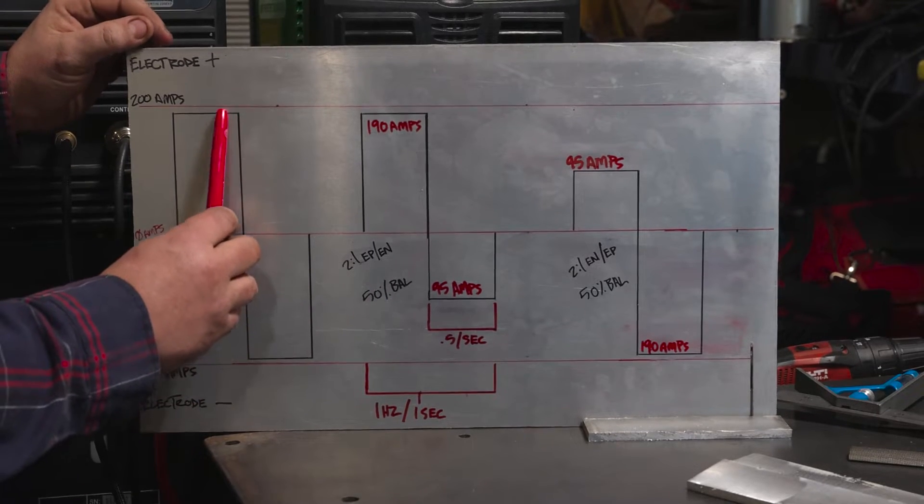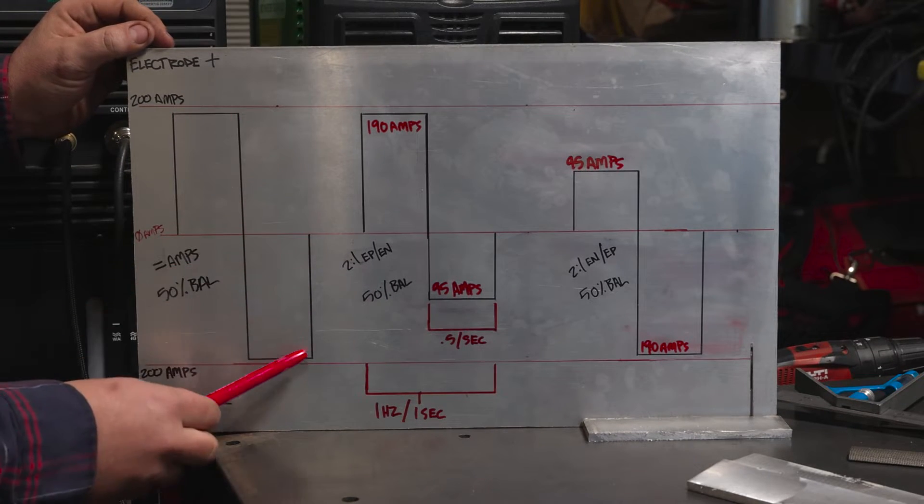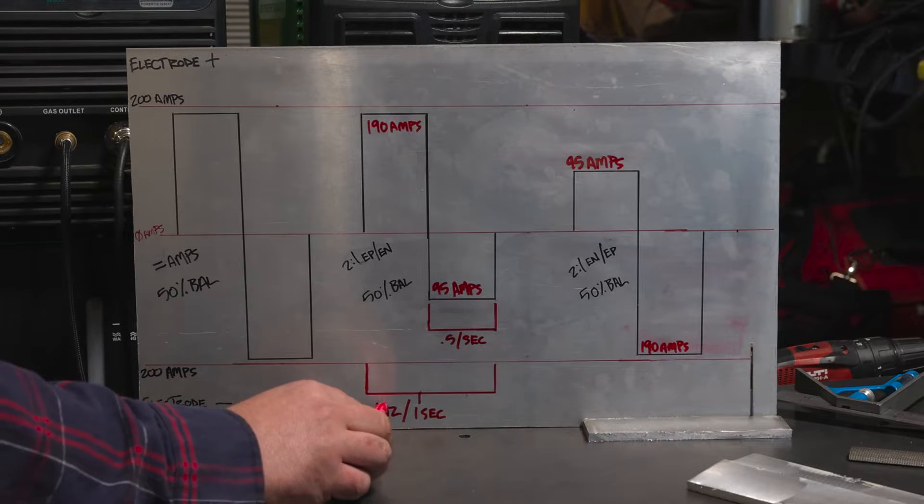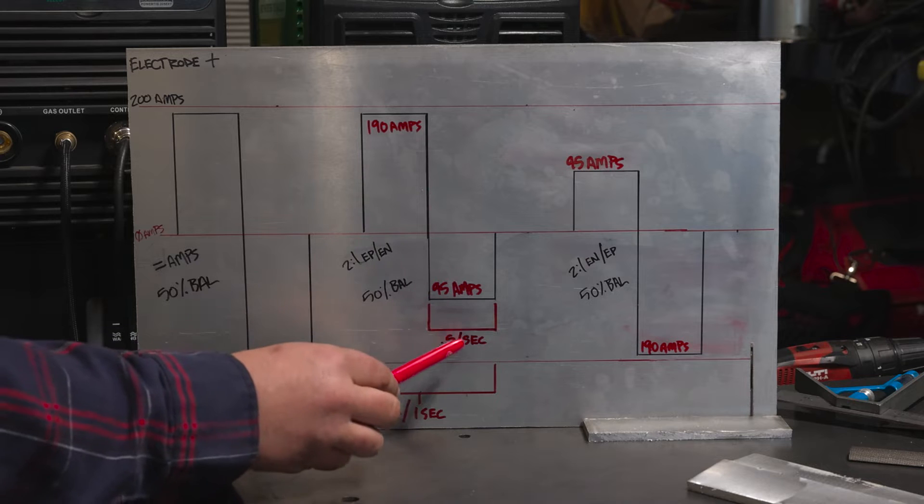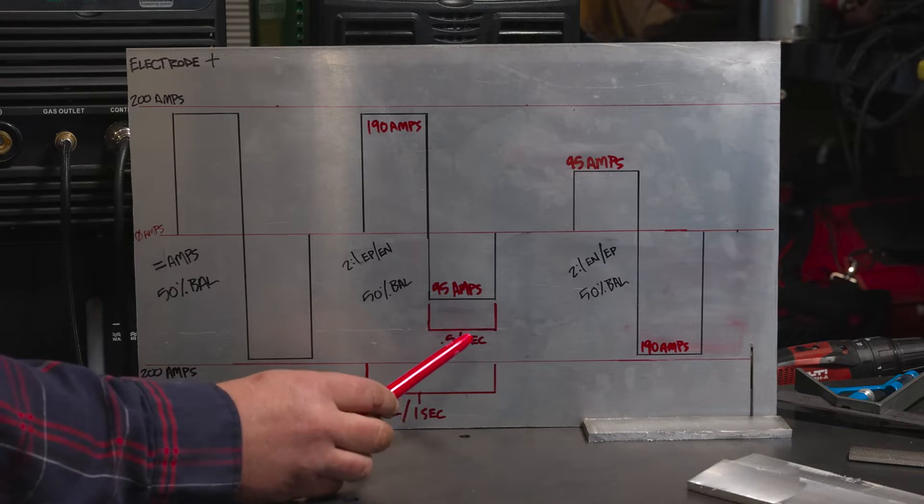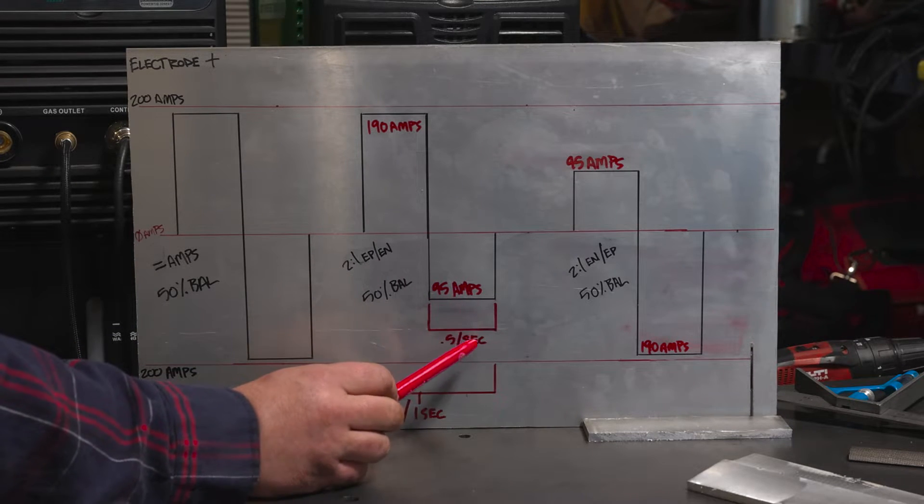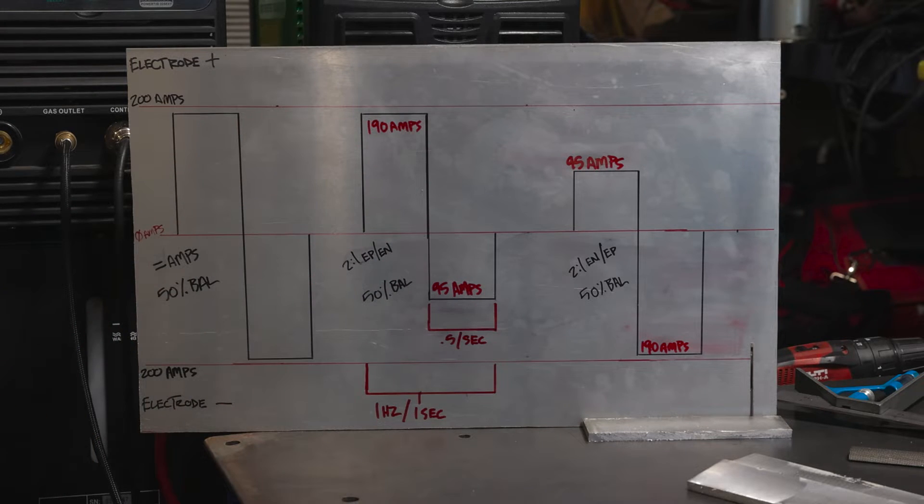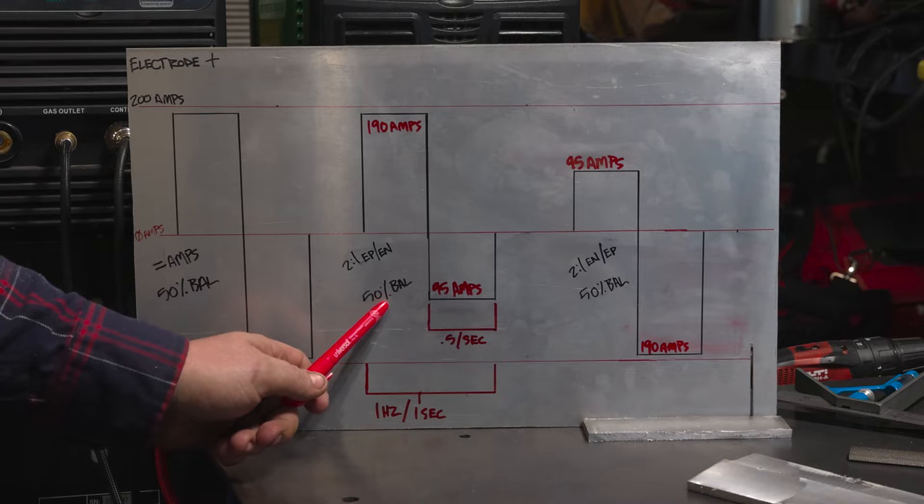Now you can see we're at our peaks for the same amount of time. Let's say we're running one hertz, which is one waveform cycle per second. So we are at our peaks for a half second on both sides of the waveform, so we're still balanced here.